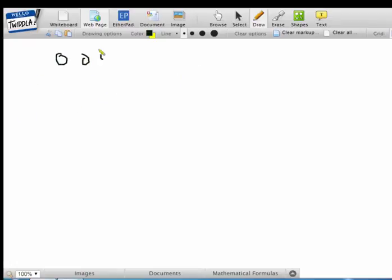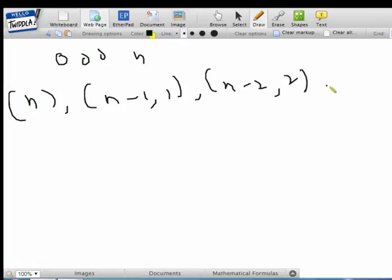So for odd n, we have the arrangement n, n minus 1, 1, n minus 2, 2, and so on.